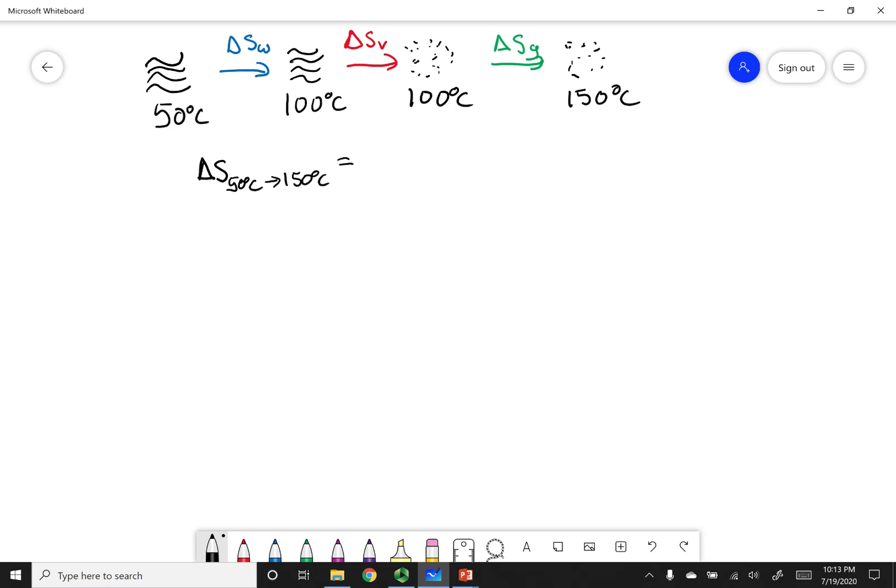Now because delta S is a state function, I can add up all the steps and I can calculate the total entropy. And so what that means is I'm going to take the entropy of heating up water. I'm going to add it to the entropy of vaporization. And I'm going to go ahead and add it to the entropy of heating up a gas. So let's take apart each one of these things.